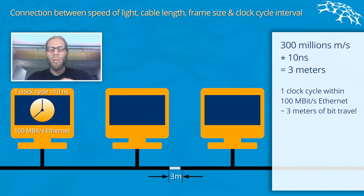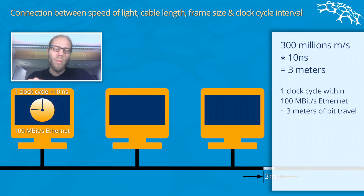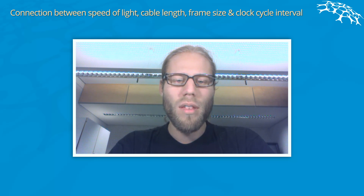This means that if you only put one bit on the cable and want to occupy the entire network and the entire medium, the medium has to be shorter than three meters. Obviously, this doesn't make sense. If you consider using Ethernet in an office, cables may need to be as long as 100 or 200 meters. So the inventors of Ethernet said, let's fight this problem by creating Ethernet frames that have to have a certain minimum length.